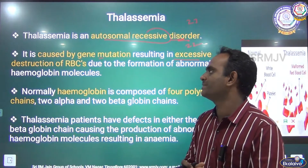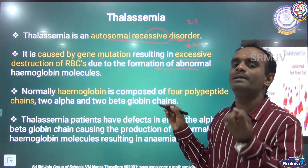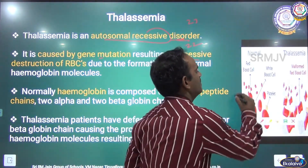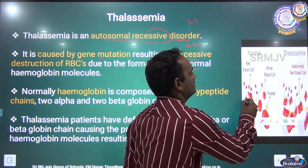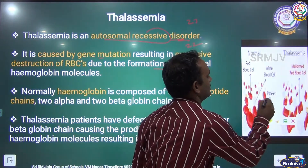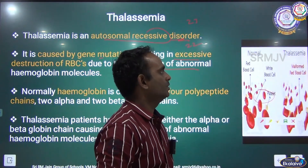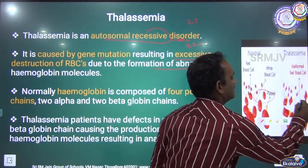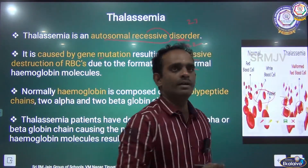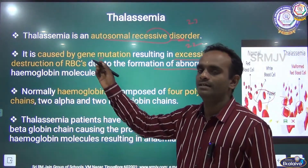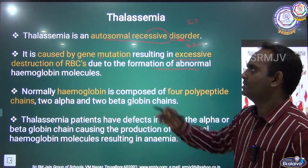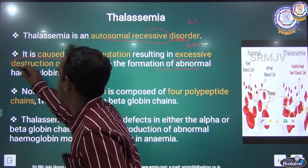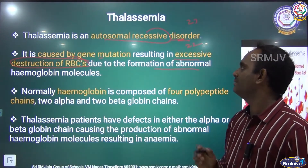Damage of RBC takes place due to the formation of abnormal hemoglobin molecules. See the picture here — this is the normal blood cells having RBC, WBC, and platelets. During the thalassemia condition, the shape of the RBCs is damaged. This is mainly caused due to gene mutation resulting in the excessive destruction of RBC, and destruction of RBC leads to thalassemia.